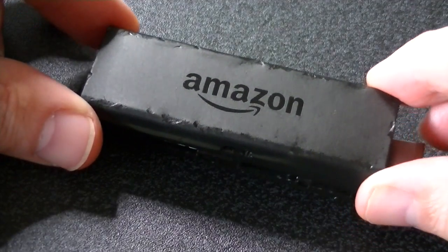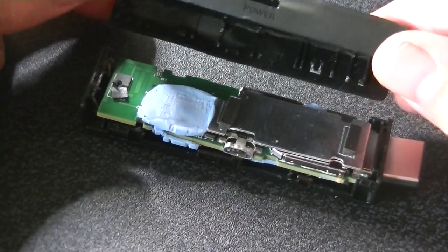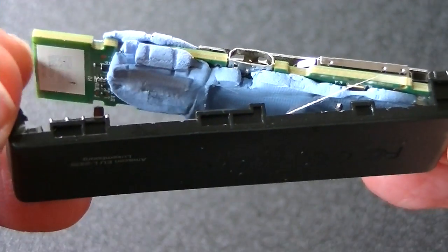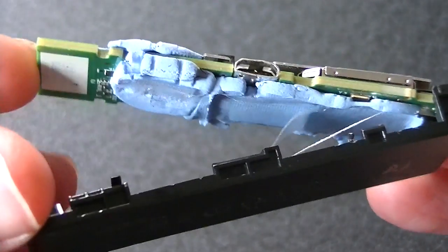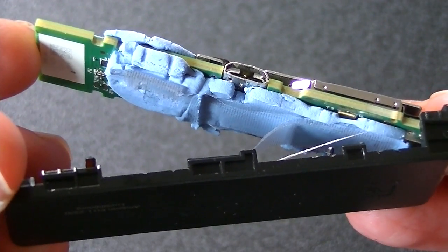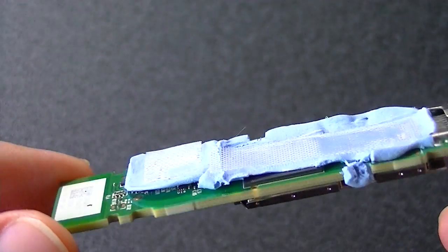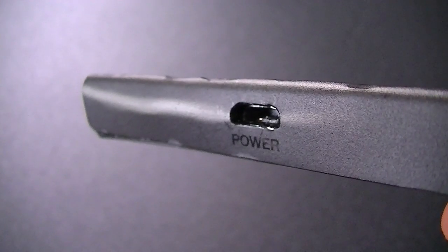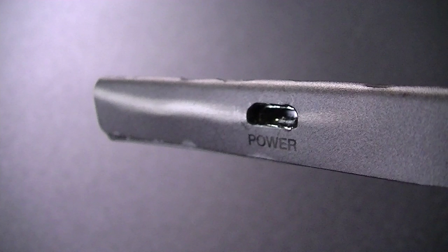And here we have it, the insides of the Amazon Fire TV stick. And no, I have no idea what that putty tack stuff is. If you do, please leave your ideas in the comments because I'm stumped.